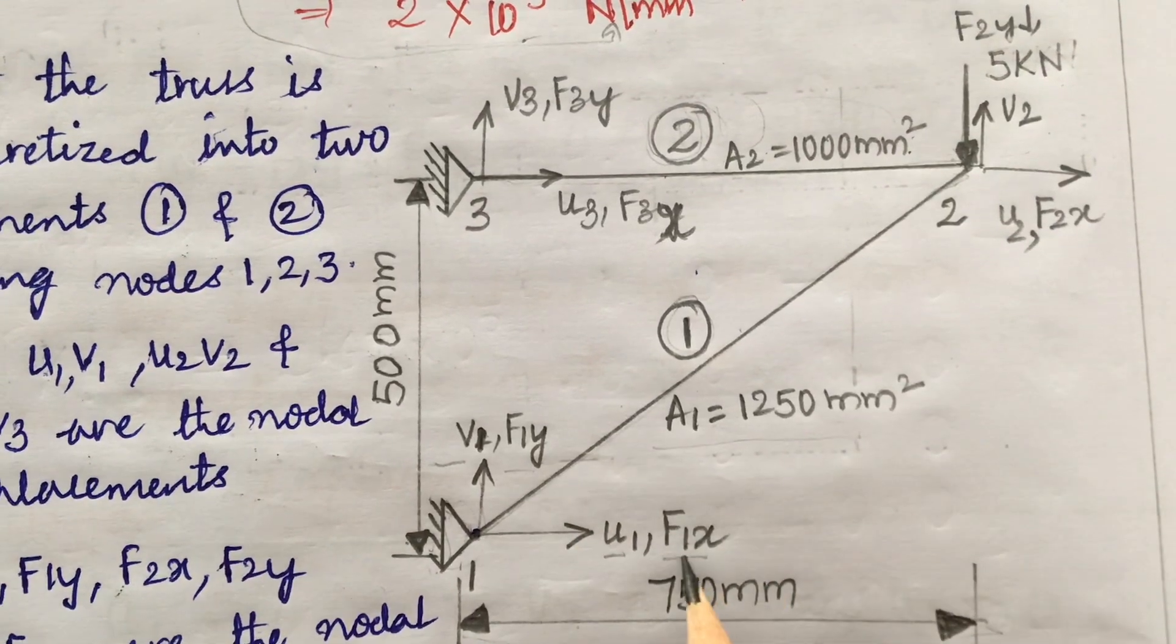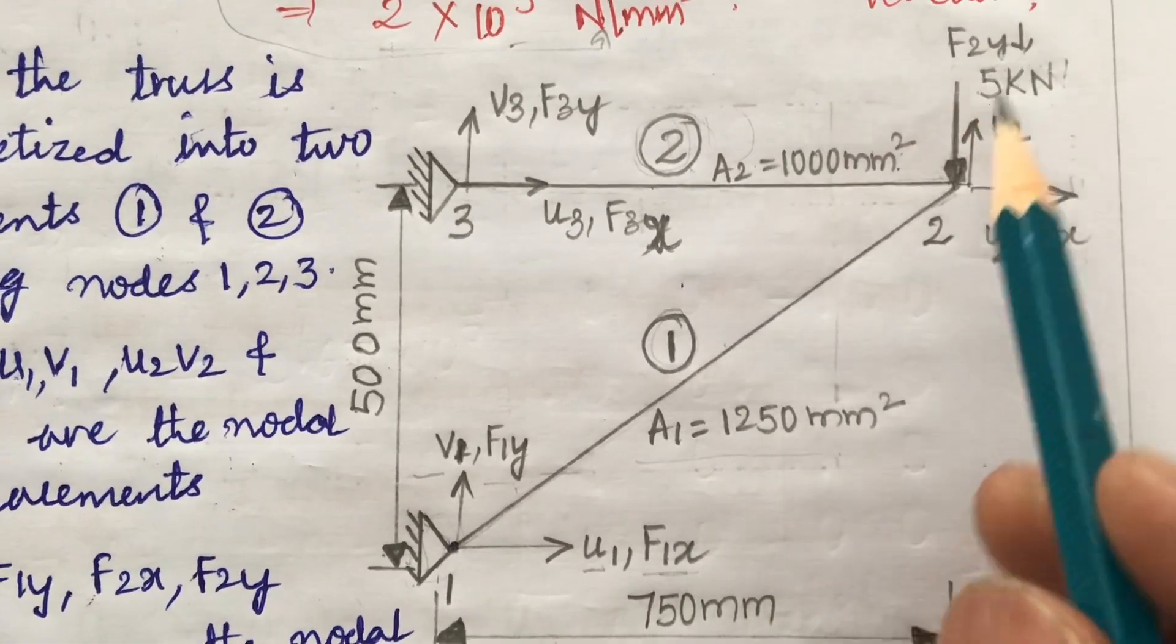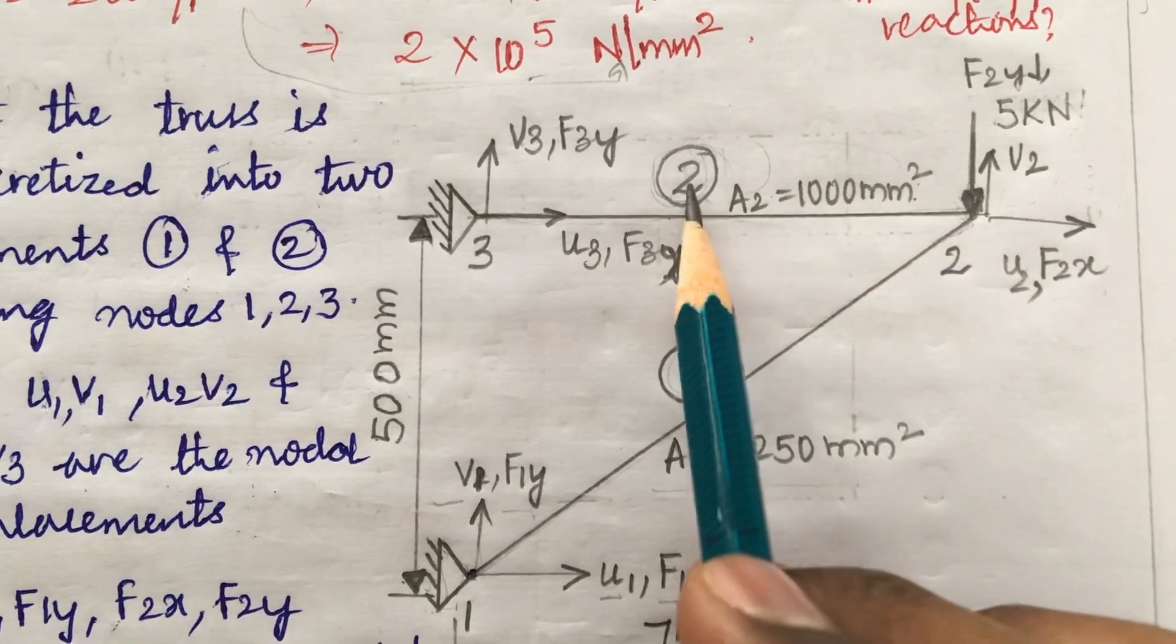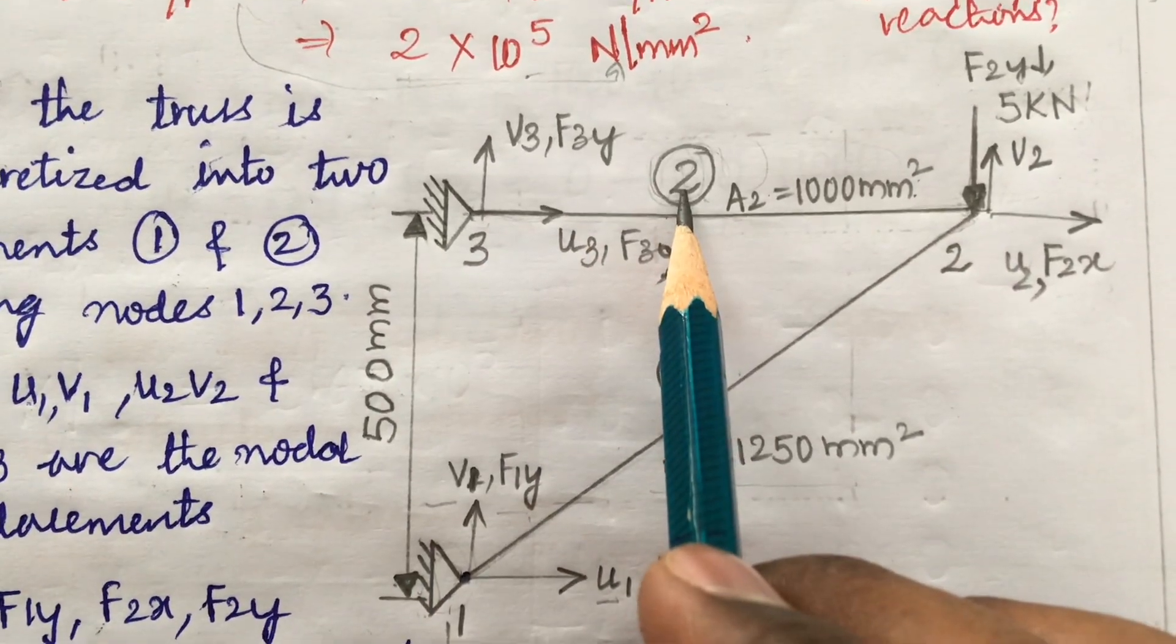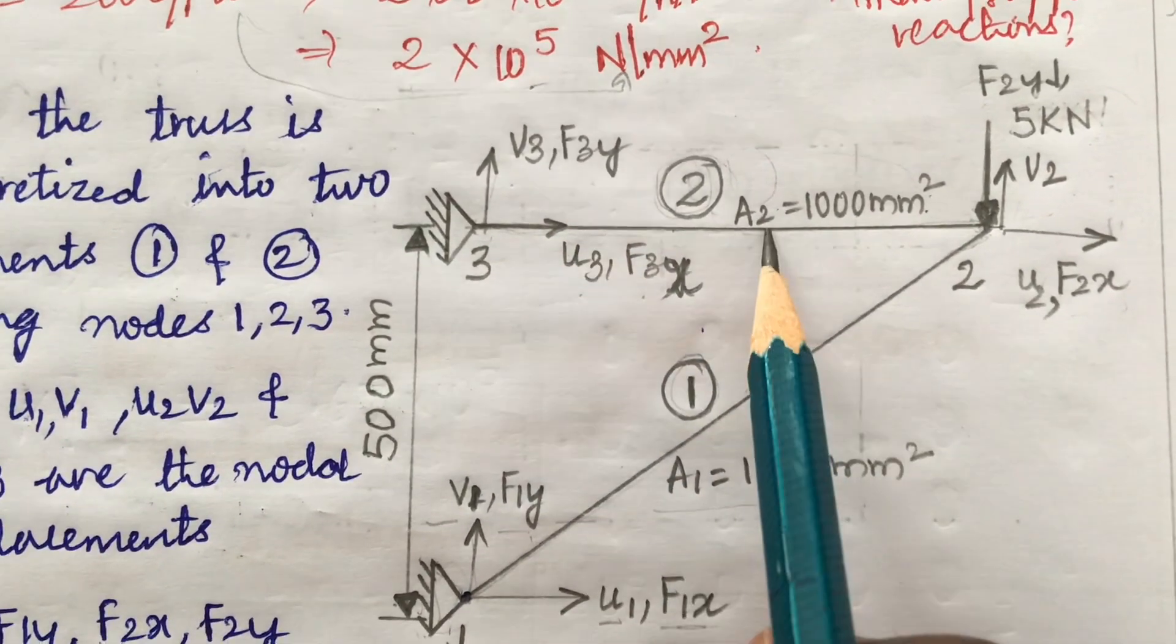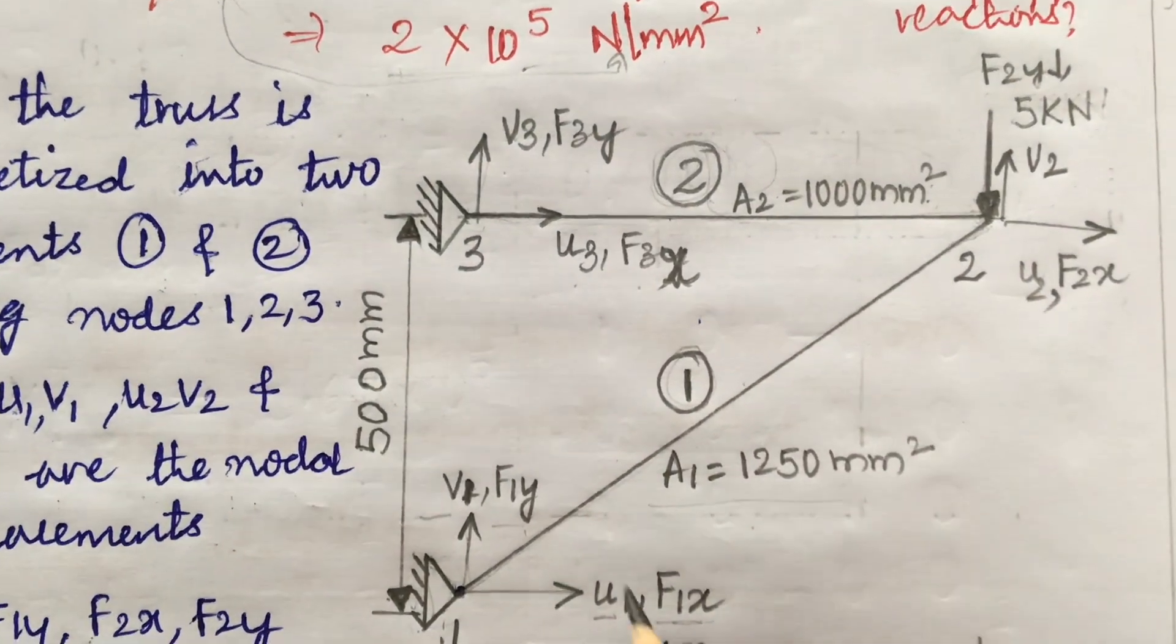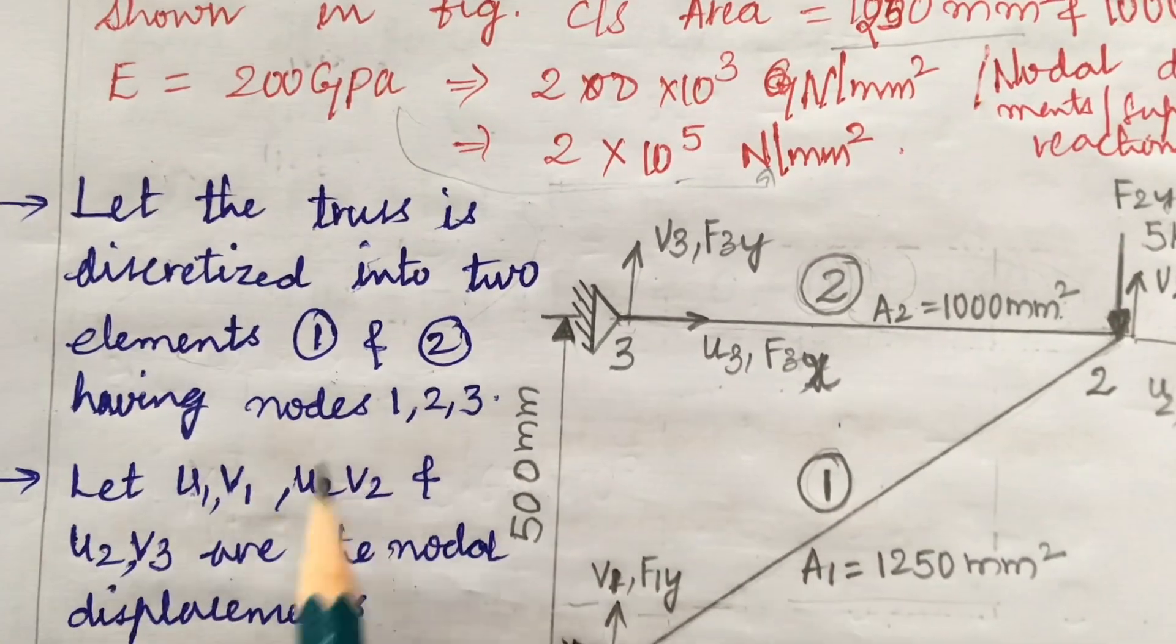Element one nodes are what? One and two. This becomes node one and this becomes node two. With respect to node one, we have the displacements U1, V1 along x and y, and the forces we have along x direction and y direction. At node two we have U2, V2 and F2x and F2y. F2y is given, that is acting downward, that is 5 kN.